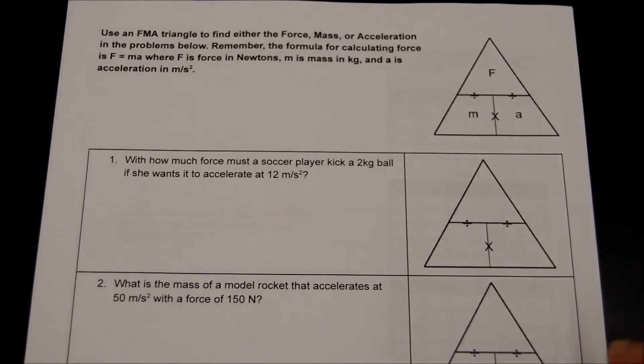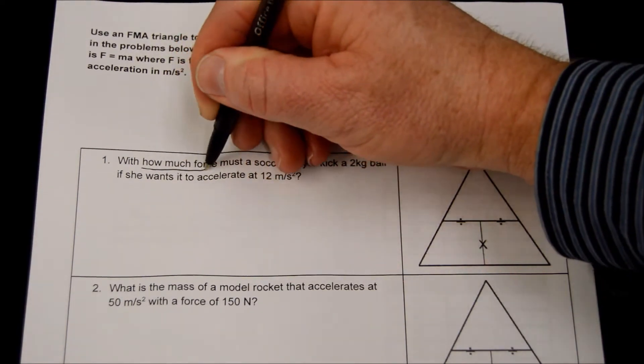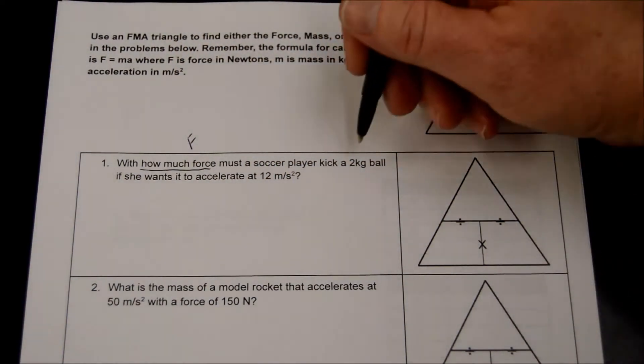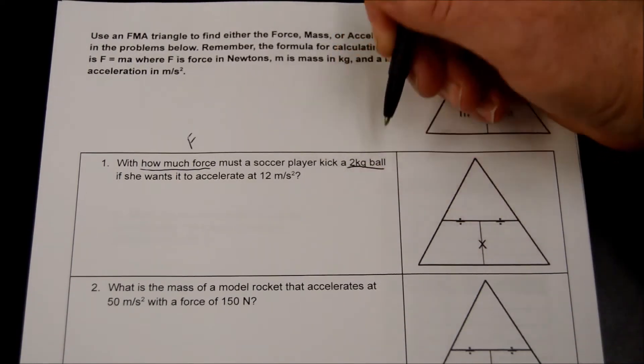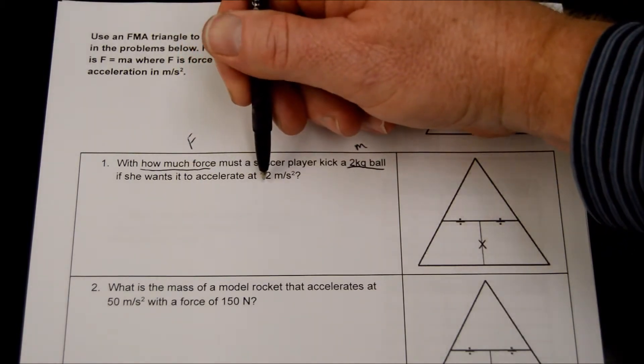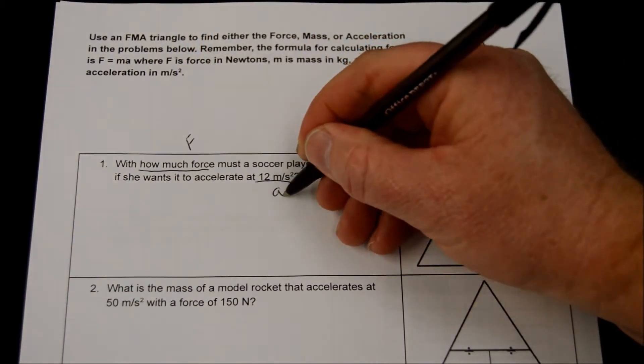We are looking for how much force, so we are going to be looking for F for force. We already know that the ball is two kilograms, and if it's kilograms, it's mass, and she wants it to accelerate at 12 meters per second. That's our A for acceleration.